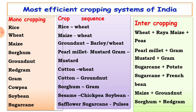Intercropping means cultivation of different crops on the same piece of land with a definite row pattern — plant-to-plant and row-to-row distance is maintained. Examples: wheat plus raya, maize plus peas, pearl millet plus gram, mustard plus gram, sugarcane plus potato, sugarcane plus French bean, maize plus groundnut, sorghum plus red gram. Efficient cropping means maximum profit and maximum use of available resources — land, labour, solar energy, water — that is called efficient cropping system.